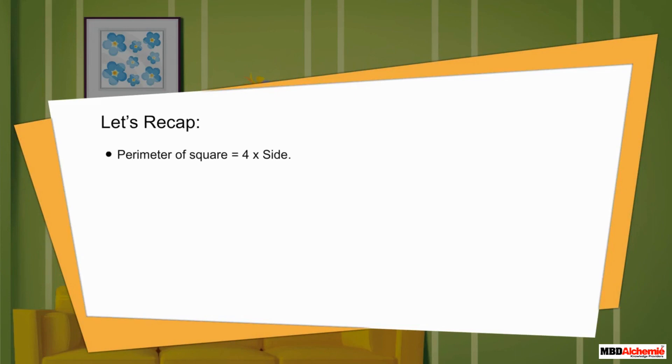Let's recap. Perimeter of square is equal to 4 times the side.